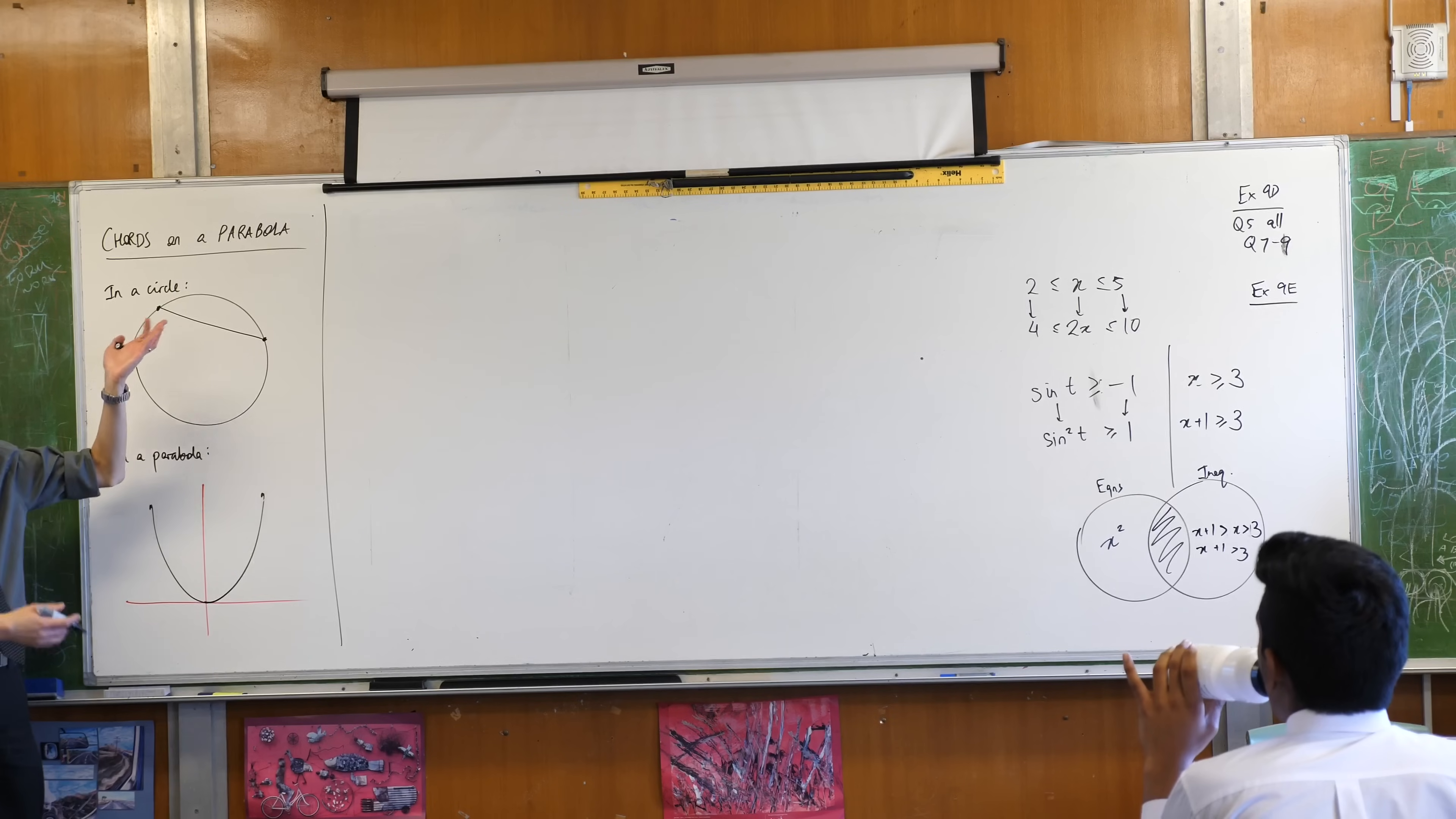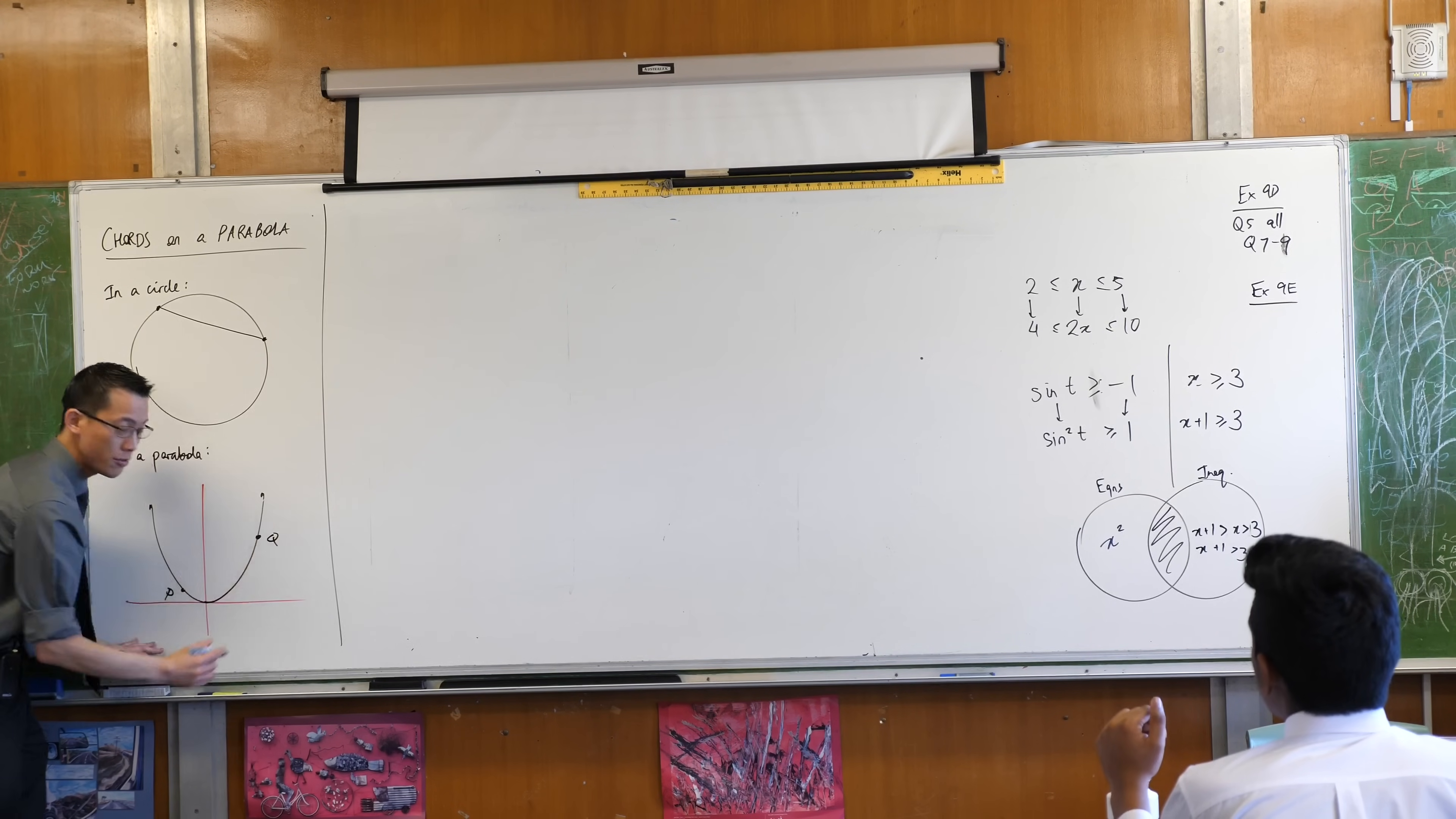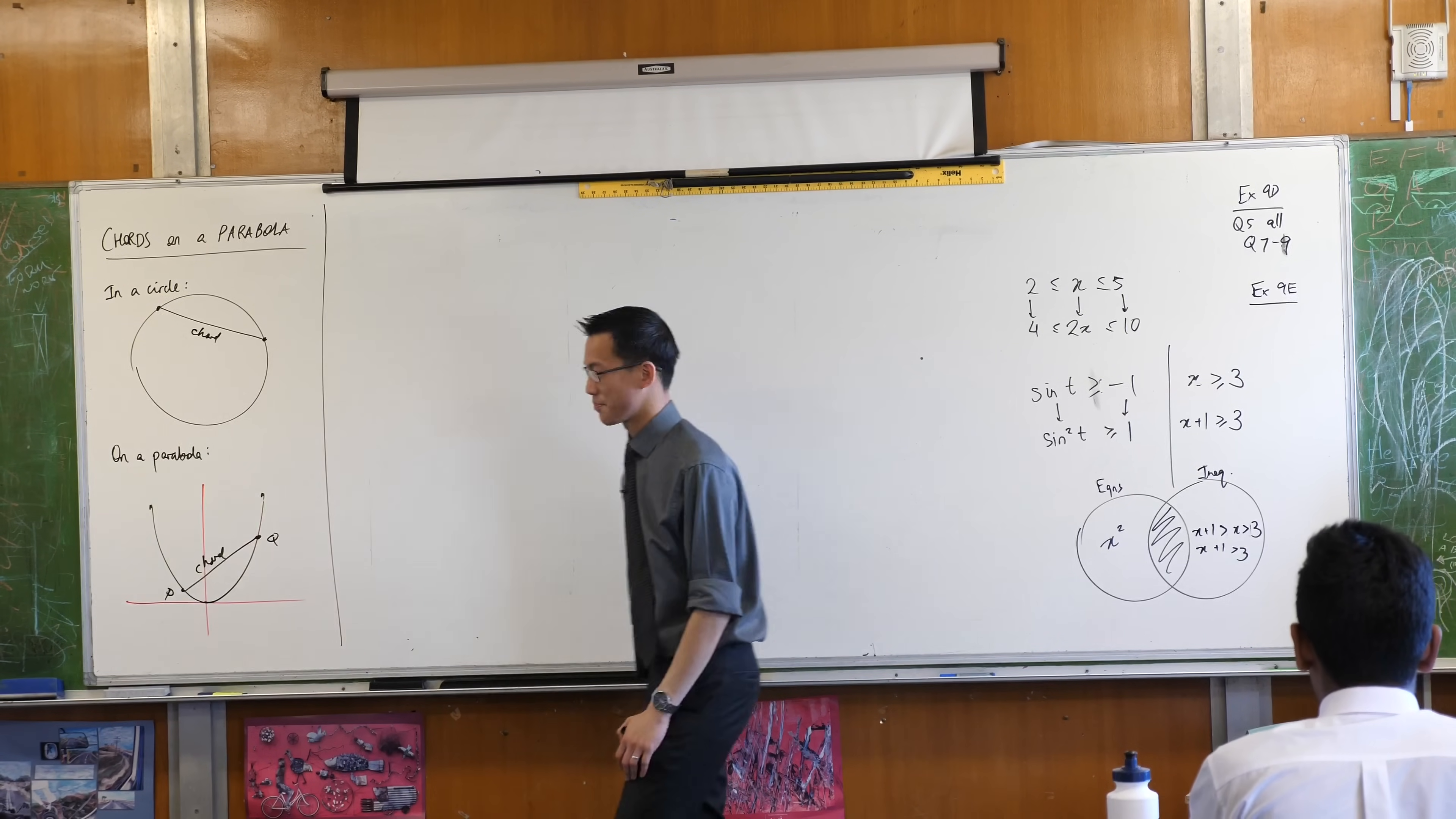Once you have that definition it's exactly the same for a parabola which is kind of nice, right? So you pick two points, any two points you like, here and here. Let's call these guys say P and Q and the interval joining these is a chord, right? So here's a chord, you get a chord, you get a chord, everyone gets a chord, that's all we're talking about, okay?